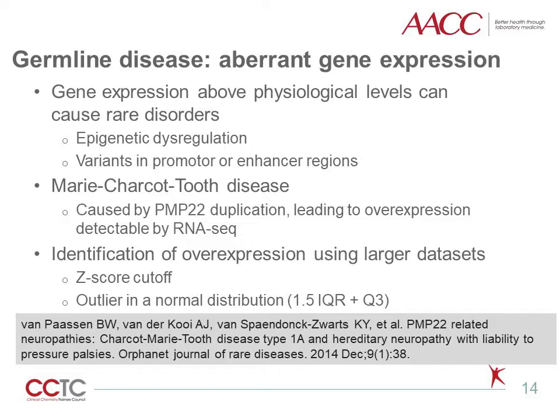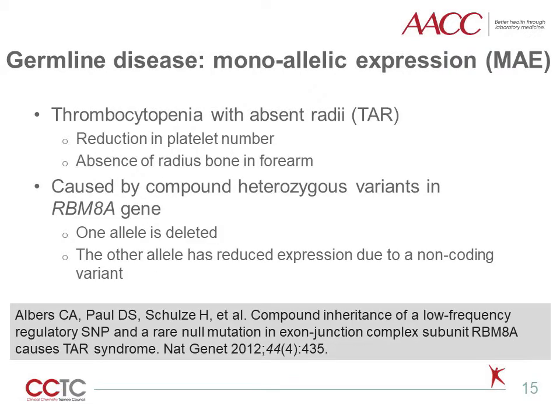RNA-Seq can be used to identify overexpressed genes by defining a cutoff for normal physiological gene expression using a Z-score or outlier threshold in a larger normal dataset. Monoallelic expression can also cause rare germline disorders and be detected by RNA-Seq. For example, thrombocytopenia with absent radii, or TAR, is a rare germline disorder characterized by a significant reduction of platelet number and the absence of radius bone in the forearm. Dr. Albers and colleagues found that TAR is caused by compound heterozygous variants in the RBM8A gene, where one allele is deleted and the other allele displays reduced expression due to a non-coding variant. Allele-specific expression can be detected by RNA-Seq while it would not be detectable using whole genome or whole exome sequencing.